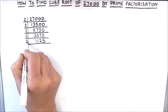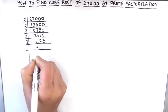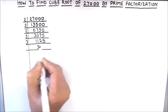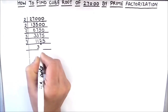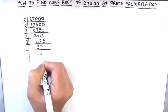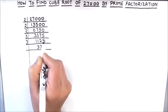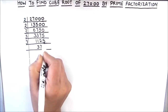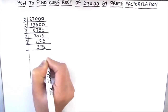Let's try 3 again. 3 times 3 is 9, 2 is carried over this becomes 22, 3 times 7 is 21, 1 is carried over this becomes 15, 3 times 5 is 15. So 1125 divided by 3 gives us 375.